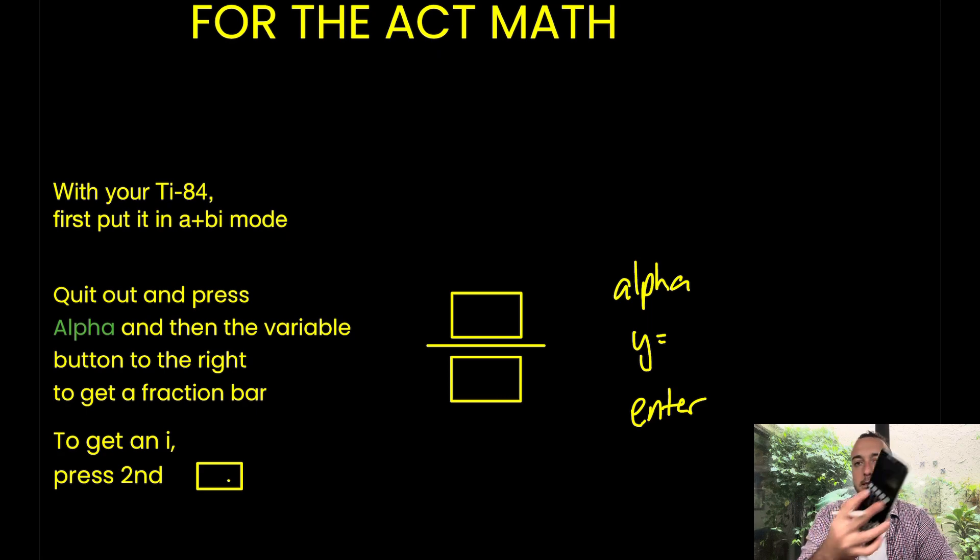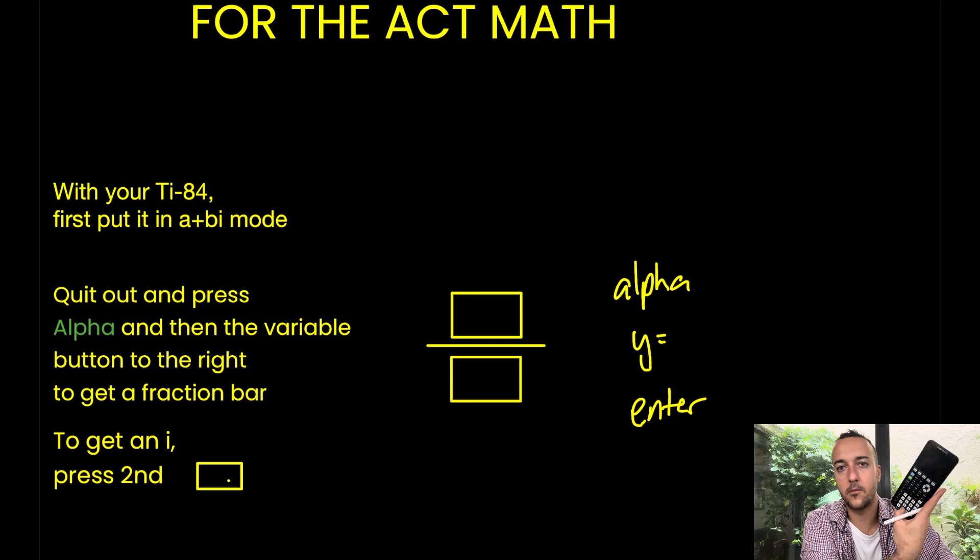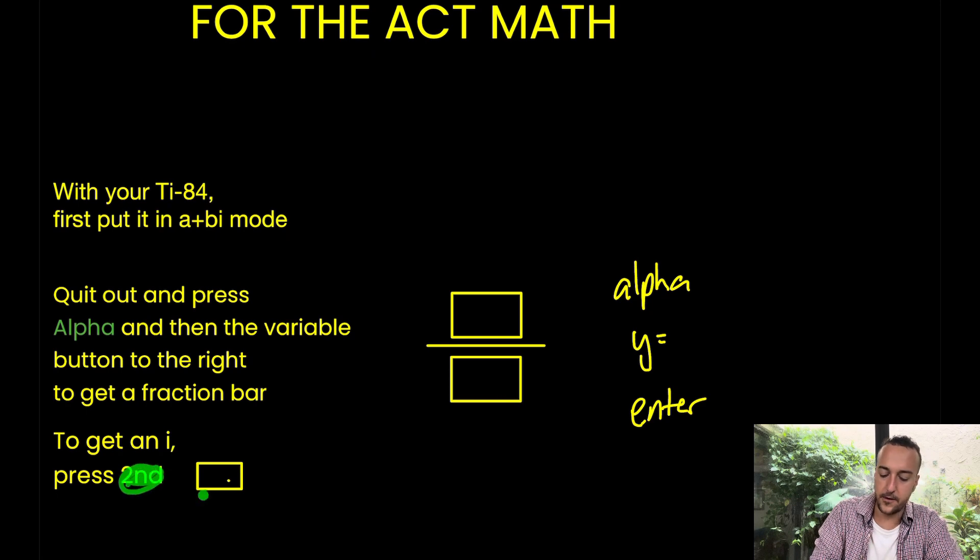You're actually going to be pressing second, and then the period button, all the way down here, where my thumb is. Again, how do you get an i? You press second, and then the period button.